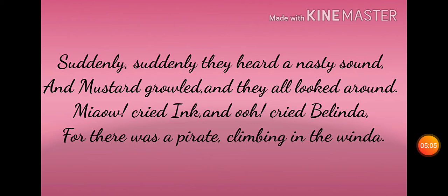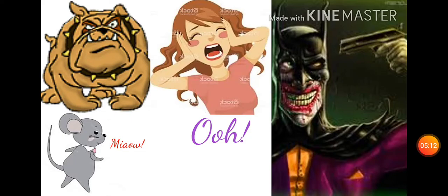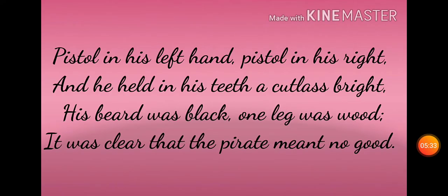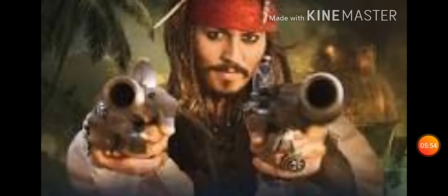اچانک انہوں نے ایک بھیانک آواز سنی، Mustard نے بھونکنا شروع کیا، ڈر سے وہ ایک دوسرے کی طرف دیکھنے لگے، بلی نے میاؤں میاؤں کرنا شروع کیا، Belinda بھی چلائی کیونکہ ایک ڈاکو — ایک لٹیرا — کھڑکی سے اندر آ رہا تھا۔ یہاں پر Ogden Nash نے rhyme بنانے کے لیے 'window' کی بجائے 'winda' لکھا — یہ اس شاعر کی خاص بات تھی کہ وہ جان بوجھ کر الفاظ کی spelling بدل دیتا تھا۔ اس کے دونوں ہاتھوں میں pistol تھے، منہ میں تیز دھار چھری تھی، کالی داڑھی تھی، ایک ٹانگ لکڑی کی تھی، اور اس کے ارادے خطرناک لگ رہے تھے۔